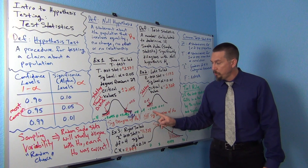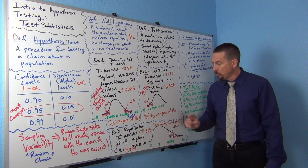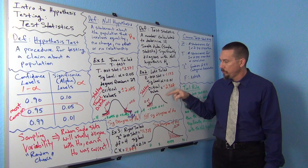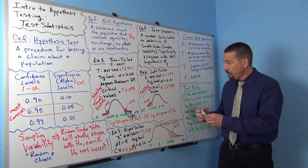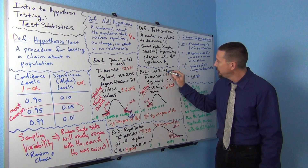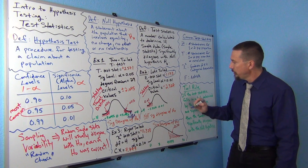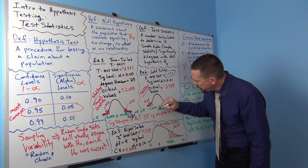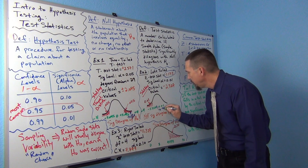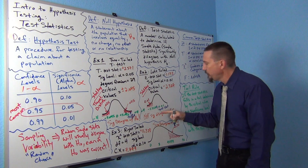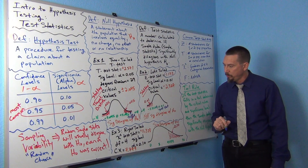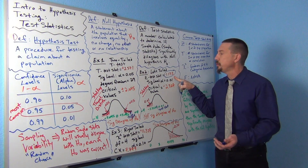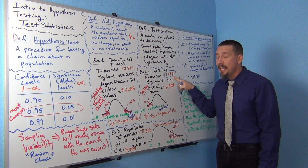Think of the number line: negative 4 is way out here, 0 is in the middle. Our test statistic is negative 1.173 — where does that fall compared to the tail? It's going to be kind of around negative 1, so my test statistic is falling over here. It's not in the tail. It's not in the tail determined by the critical value. Not in the tail means that the sample data only disagrees with the null hypothesis a little bit — it does not significantly disagree.